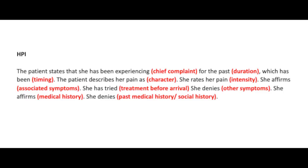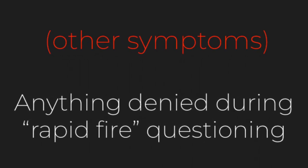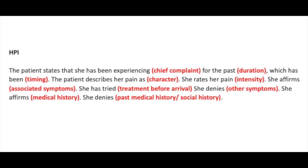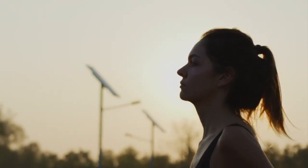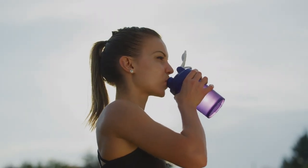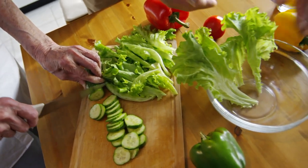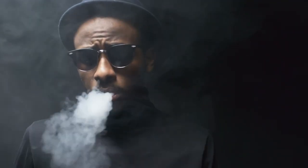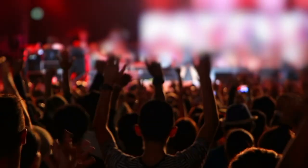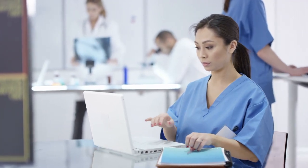She denies other symptoms — anything from the rapid-fire list that was denied goes here. She denies relevant medical history, past medical history, and social history. Any history in the HPI should be incredibly relevant to why the patient is presenting today. If unsure whether to include historical information, default to: did the provider ask it? If yes, it's relevant. Not everything your patient says needs to be included. Keep practicing — it gets easier.